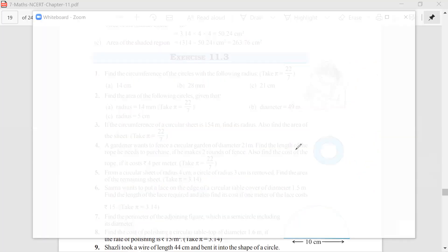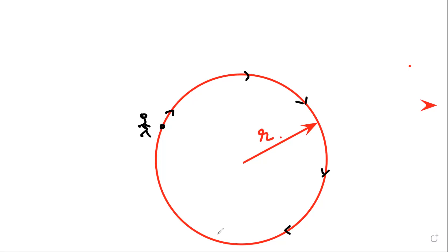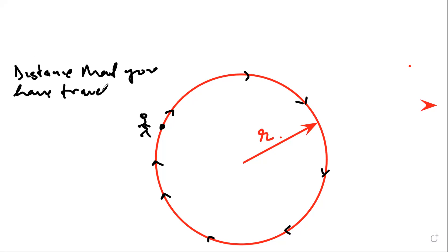Let us understand it further. Assume I have a circle like this, and this circle has a radius r. If you start from this point and you start walking around the circle, after some time you come back. If somebody asks you what is the distance that you have traveled, the distance traveled is equal to the circumference of the circle.